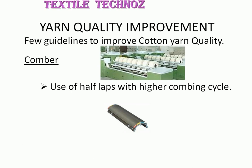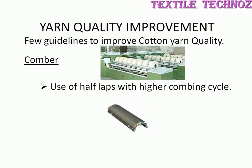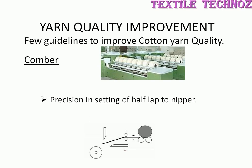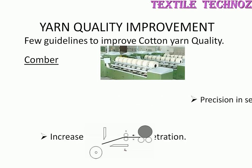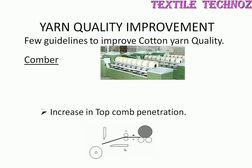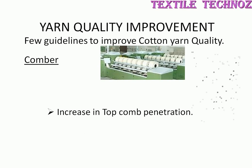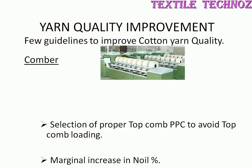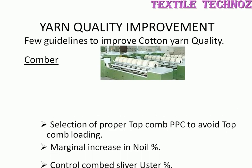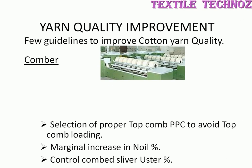In comber, use of half lap with higher combing cycle, precise setting of half lap to nipper, increase in top comb penetration, selection of proper top comb points per centimeter to avoid comb loading, marginal increase in noil percentage, and control over sliver lap percentage will improve the yarn quality.